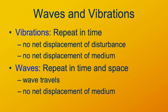Vibrations or oscillations repeat in time — back and forth, over and over. The disturbance doesn't go anywhere; a pendulum swings back and forth, a spring oscillates up and down, but the medium and the vibration don't travel. In a wave, there's a repeat in time but also in space — the wave actually travels through space. The medium itself does not go anywhere; it might move up and down or side to side, but it doesn't travel. The wave, the disturbance, travels. A good definition: a wave is an organized disturbance that moves through time and space.